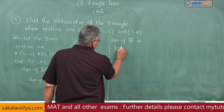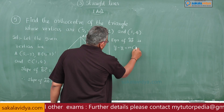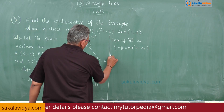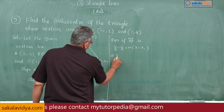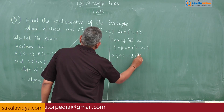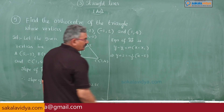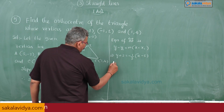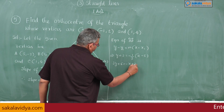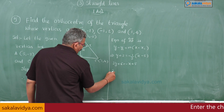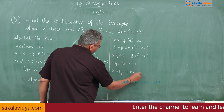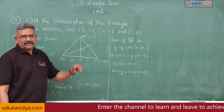Equation of altitude AD: it is a line passing through (5, -2) with slope -1/3. Using y - y1 = m(x - x1): y + 2 = -1/3 × (x - 5). Cross-multiplying: 3y + 6 = -x + 5, giving x + 3y + 1 = 0. This is equation 1.